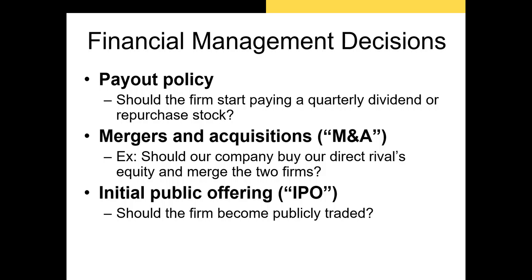Another financial management decision the CFO and financial managers must make is with respect to M&A, or mergers and acquisitions. Does the firm acquire a direct rival? Does it allow itself to accept a takeover offer? Most M&A decisions come down to whether or not an acquisition — whether of a direct competitor, a supplier, or a buyer — offers potential synergy. In other words, is the sum of the combined firm greater than its parts?